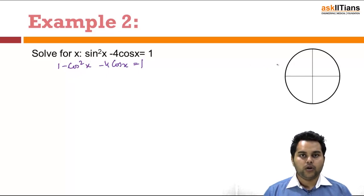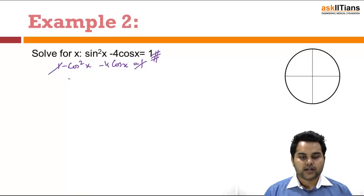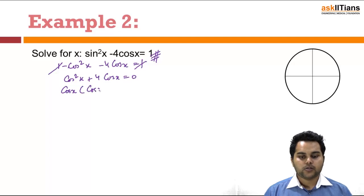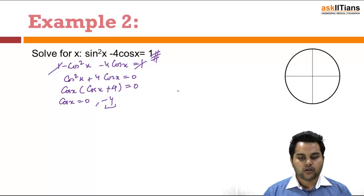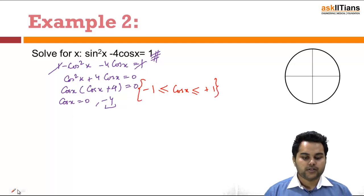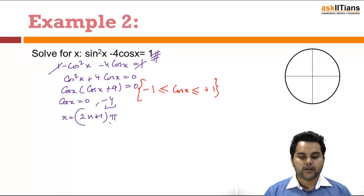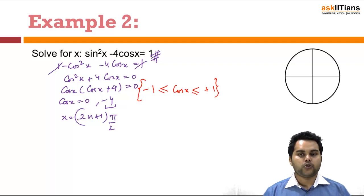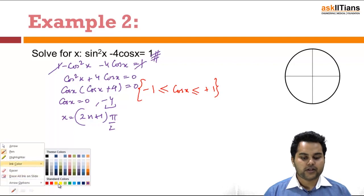I cannot locate the solution right now in the unit circle as the equation is not yet simplified. After simplifying, the 1's cancel out, leaving cos²x + 4cos x = 0. Taking cos x as common gives cos x(cos x + 4) = 0, so either cos x = 0 or cos x = -4. Since -4 is not possible — cos x lies between -1 and +1 for any value of x — we get cos x = 0, giving x = (2n+1)π/2, which is an odd multiple of π/2.